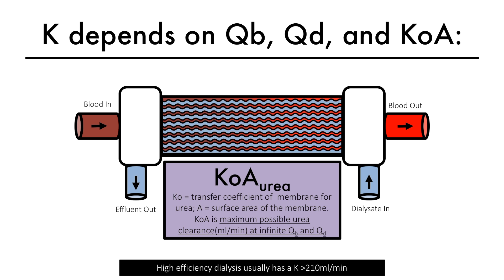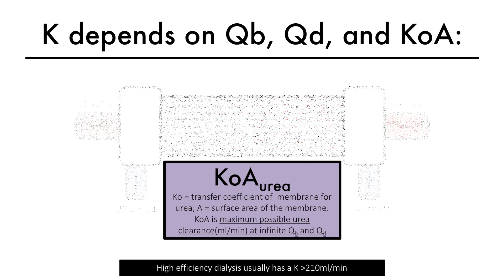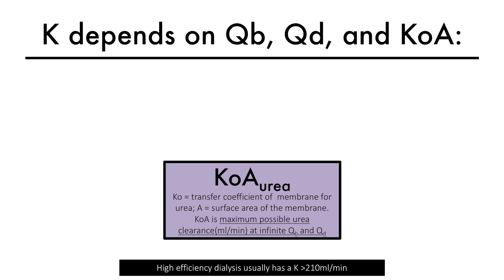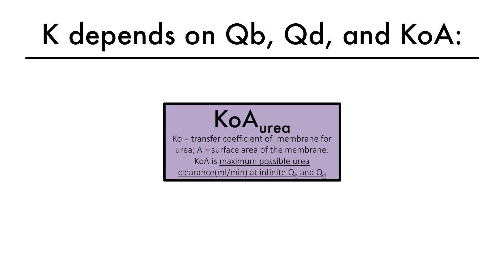Membrane characteristics of a dialyzer are reflected by the dialyzer's KOA, where KO is the transfer coefficient of the membrane for a solute — in this case, urea — and A is the surface area of the membrane. Therefore, if we could somehow raise the blood flow and dialysate flow to extremely high levels, KOA would then be the maximum possible urea clearance achievable at infinite QB and QD by that dialyzer.